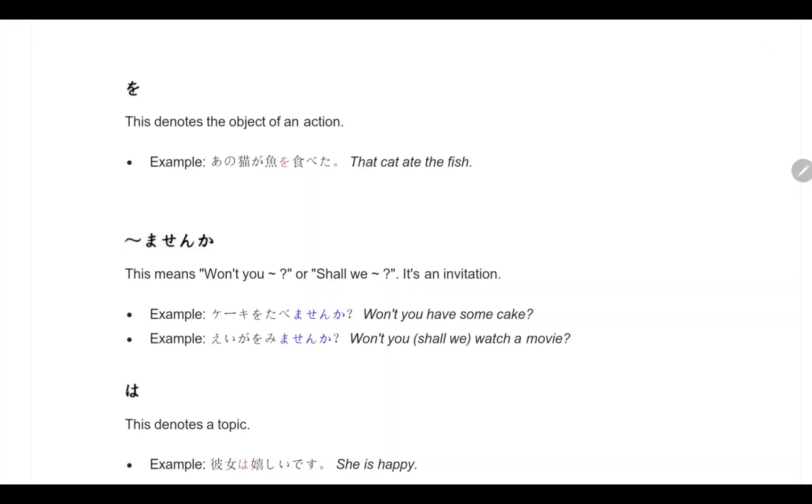Masenka. If you want to ask any person, 'shall we do' or 'won't you do', we have to ask in this way in Japanese. Keki wo tabe masenka? Won't you have some cake? Ega wo mimasenka? Won't you watch a movie? Or shall we watch a movie?